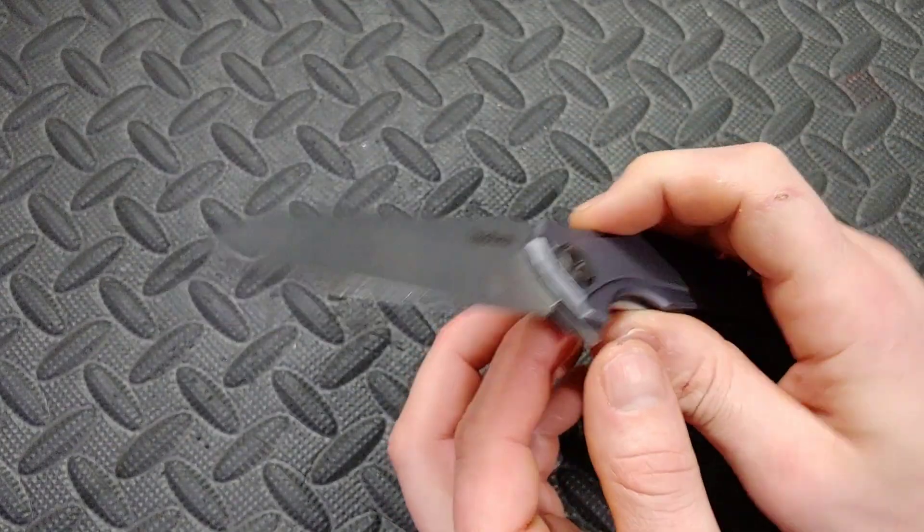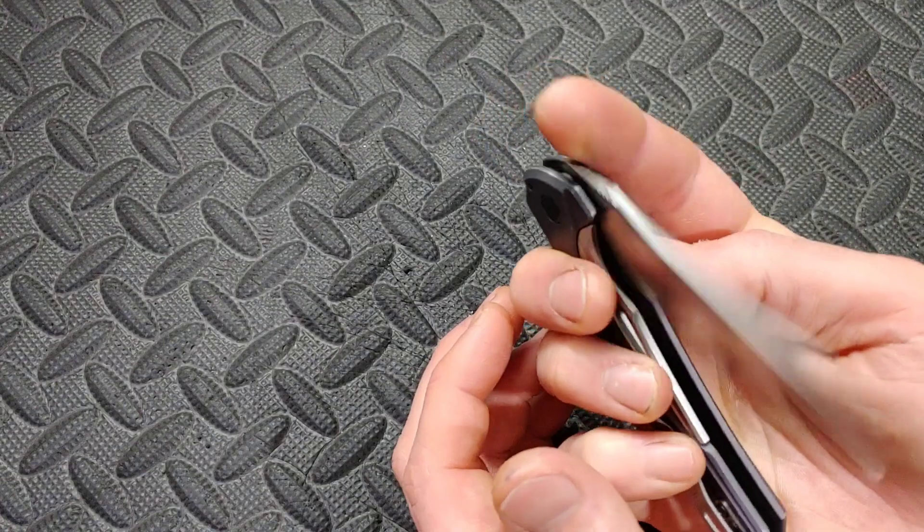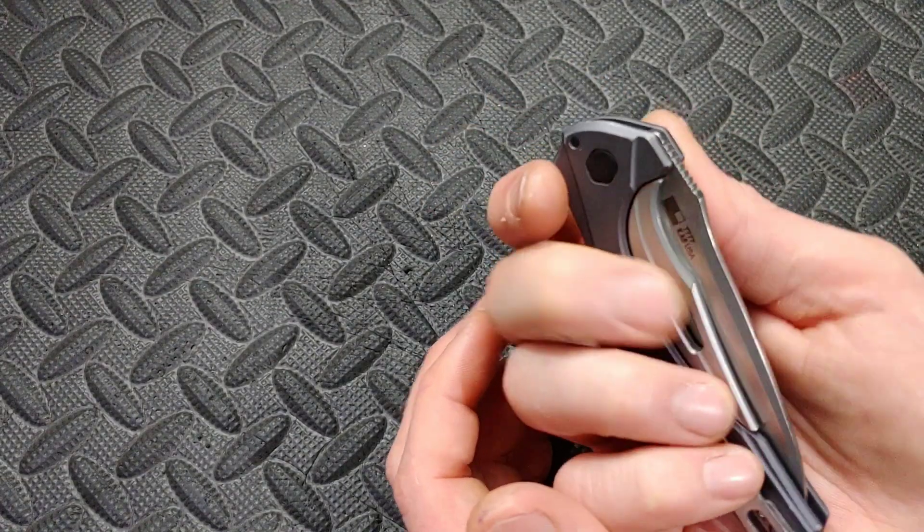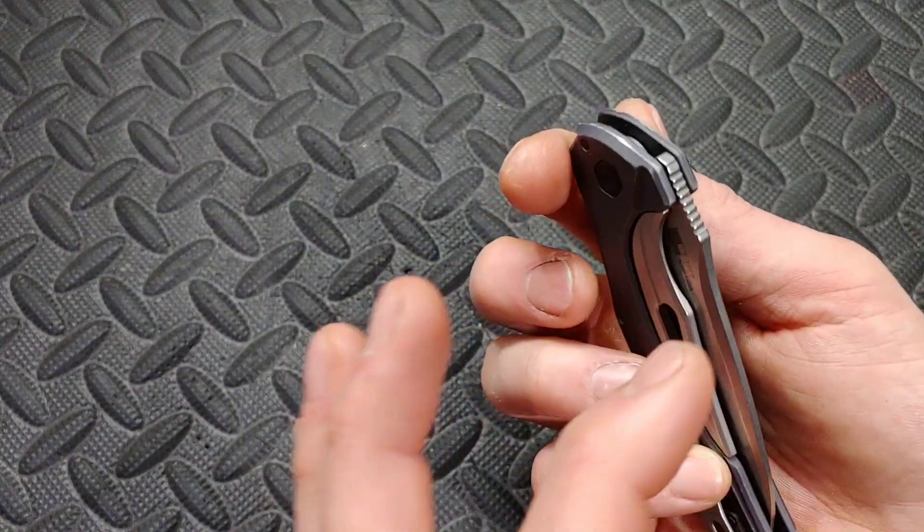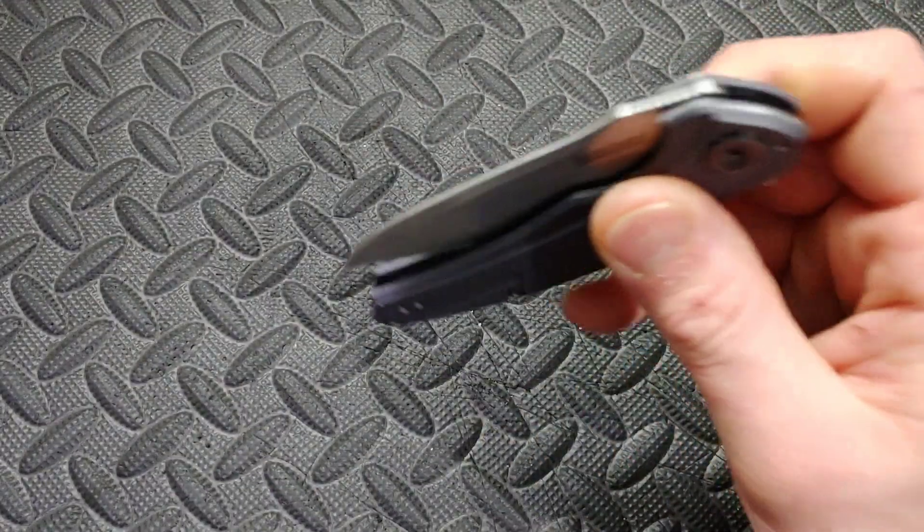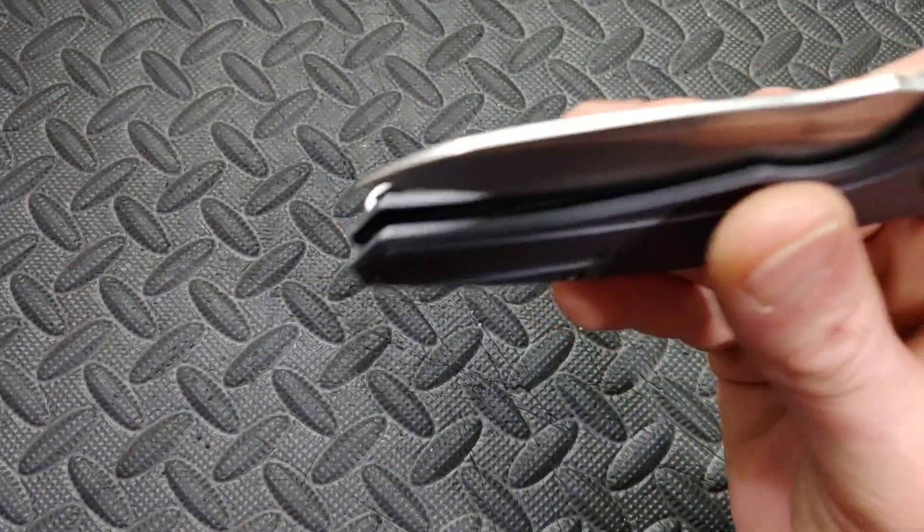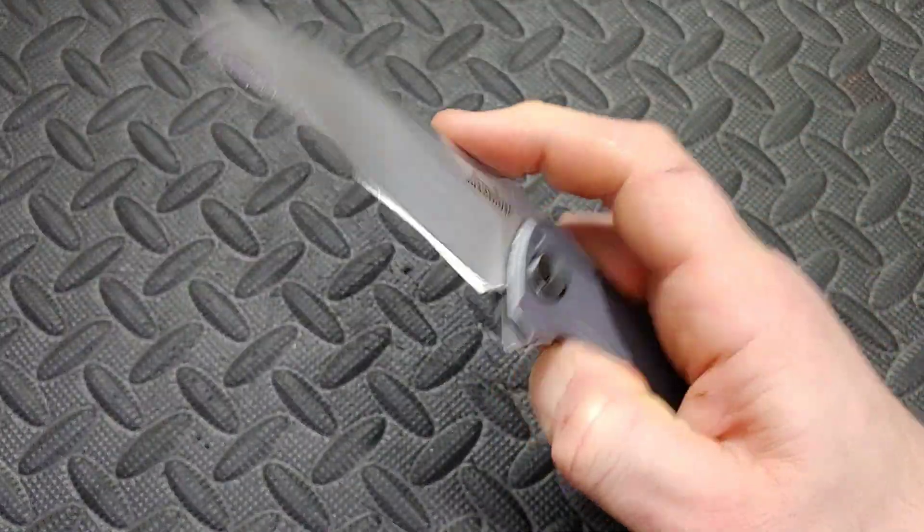But when the lock bar detent is nice and strong then you add your finger strength on top of the detent ball pushing the detent ball into the detent hole, makes it impossible to open. But very nice action. You can hear that detent ball. Let's get to the next one.